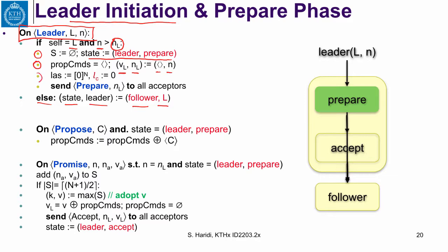We have the loss, which is the length of the longest accepted sequence, and LC, the length of the chosen sequence. We then send a prepare to all acceptors with the round number N. If we get another propose command from a client while we are in the leader prepare phase, we simply append this command to the set of proposed commands. So we can receive multiple proposed commands from clients while in the prepare phase.